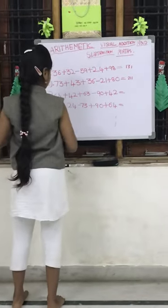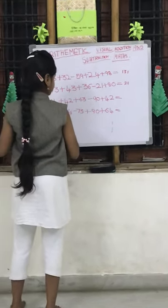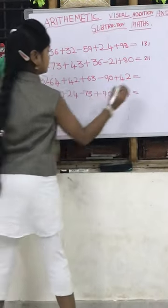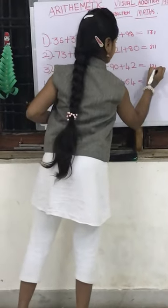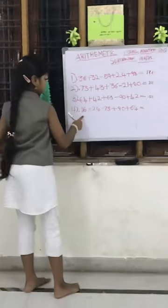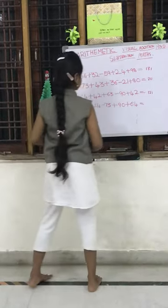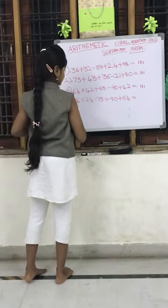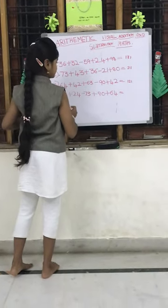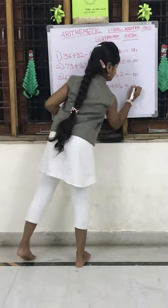The third question is 64, 42, 63 minus 90, 42. Answer is 121. The fourth and last question is 86, 24 minus 73, 90, 64. Answer is 191.